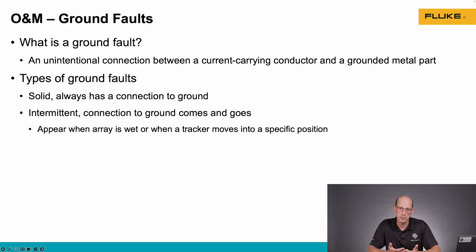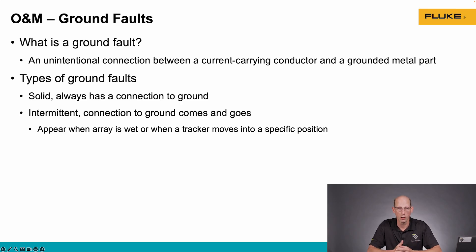There are two types of ground faults generally. A solid ground fault is a fault where the connection is solid — it's always present. The second type is an intermittent ground fault where the ground fault comes and goes. There are many causes of intermittent ground faults; it could be under wet conditions the ground fault appears, or maybe the wire is being pinched by a tracking array when it gets into a certain position.